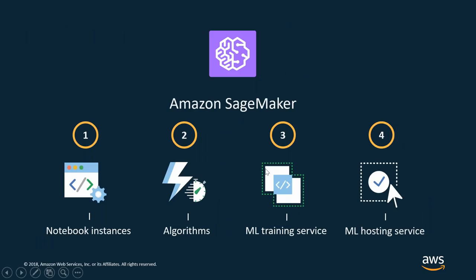SageMaker is a platform for bringing machine learning to the masses. One of the missions at AWS is to put machine learning in the hands of every developer, every architect, every builder. What we found is that data scientists aren't great cloud architects, and cloud architects aren't great data scientists. SageMaker is a platform that allows those teams to work together. It allows anybody within the machine learning lifecycle to get a handle on what's happening with training and hosting services, without ever worrying about provisioning resources. It's a completely managed service.